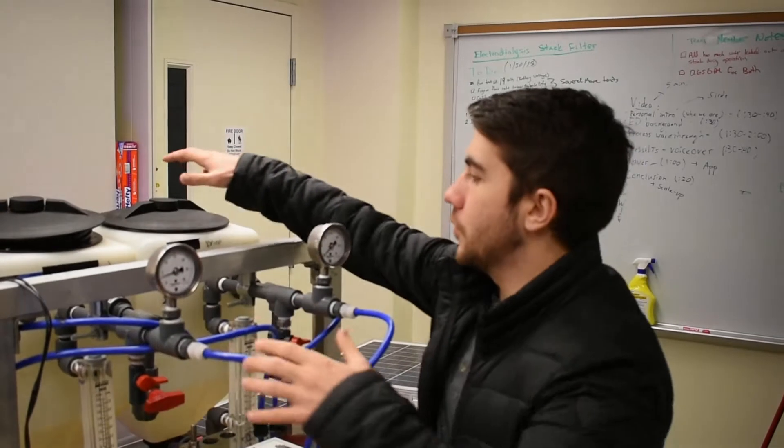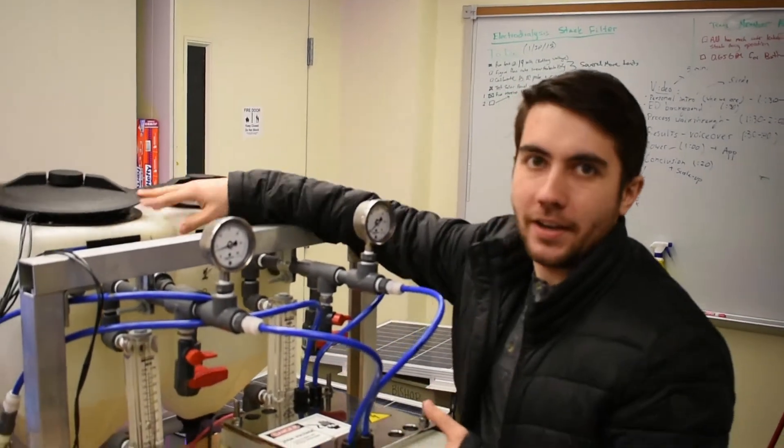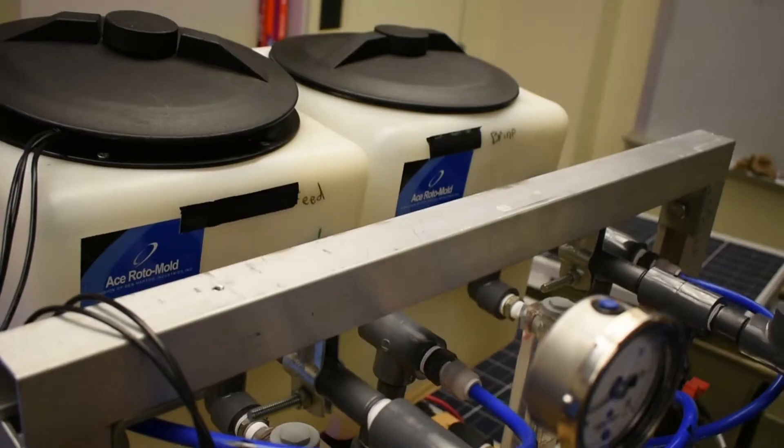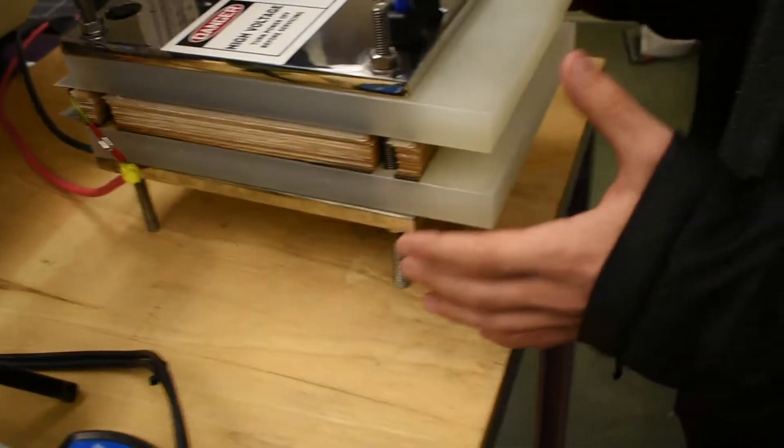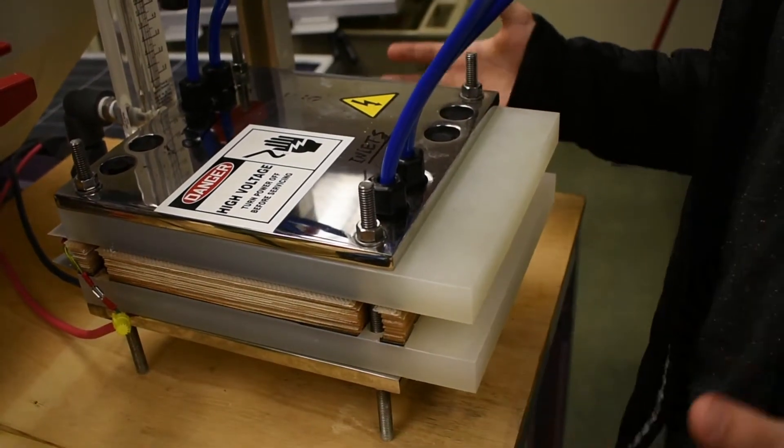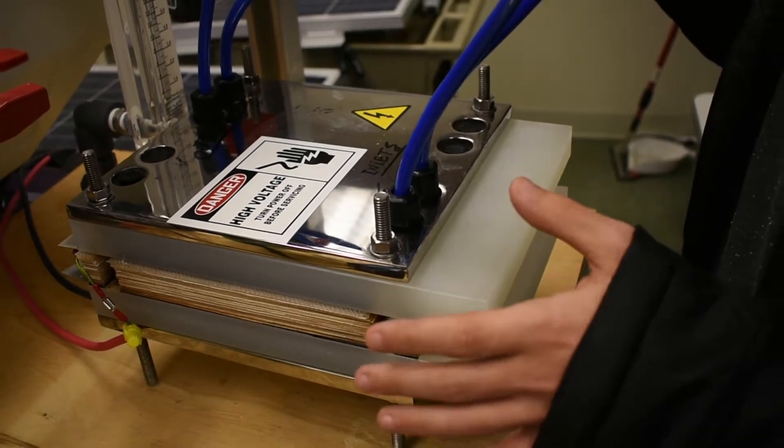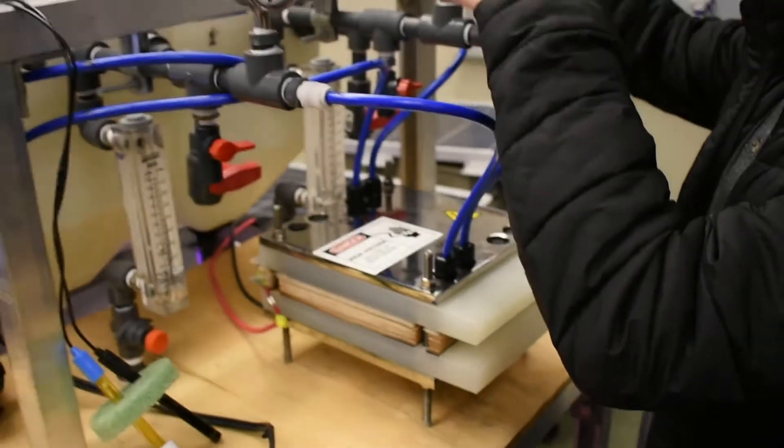The pumps are what we use to supply water through our brine tank and our feed tank to the electrodialysis cell located right here. The electrodialysis cell takes the salt out of the water and cleans it, brings it to a more normal salinity.